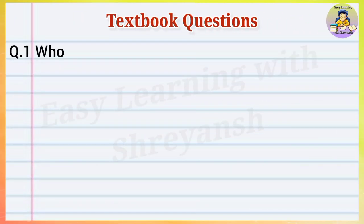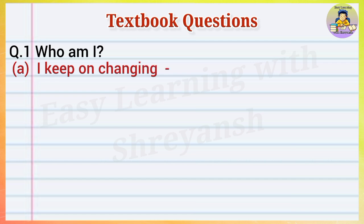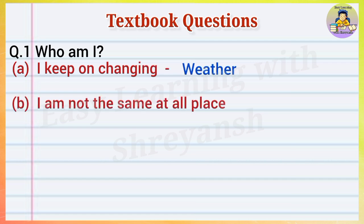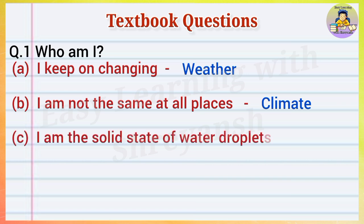Question number one: Who am I? (a) I keep on changing - Weather. (b) I am not the same at all places - Climate. (c) I am the solid state of water droplets - Snow or Hail.